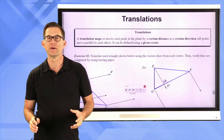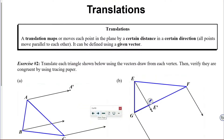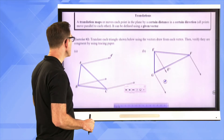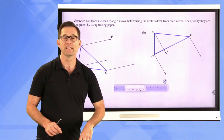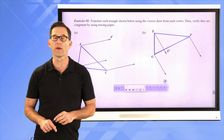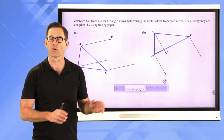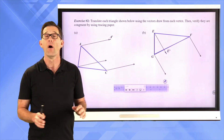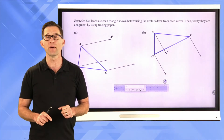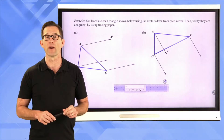Now let's look at what a translation is. A translation maps or moves each point in the plane by a certain distance in a certain direction. All points move parallel to each other. This can be defined using a given vector. When we do a translation, we're shifting or sliding every point in a given geometric figure the same distance in the same direction.